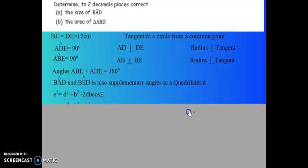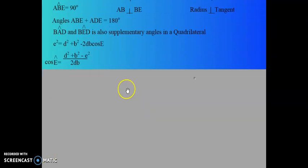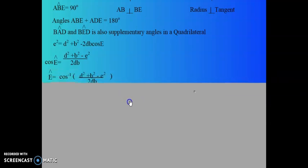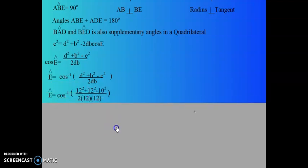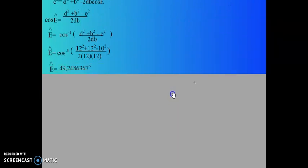So if I use my cos rule now, E squared is equal to D squared plus B squared minus 2DB cos E. So cos of angle E will be equal to D squared plus B squared minus E squared over 2DB. So E will be shift cos of D squared plus B squared minus E squared over 2DB. I substitute all my values and I calculate the answer as 49.2486367.